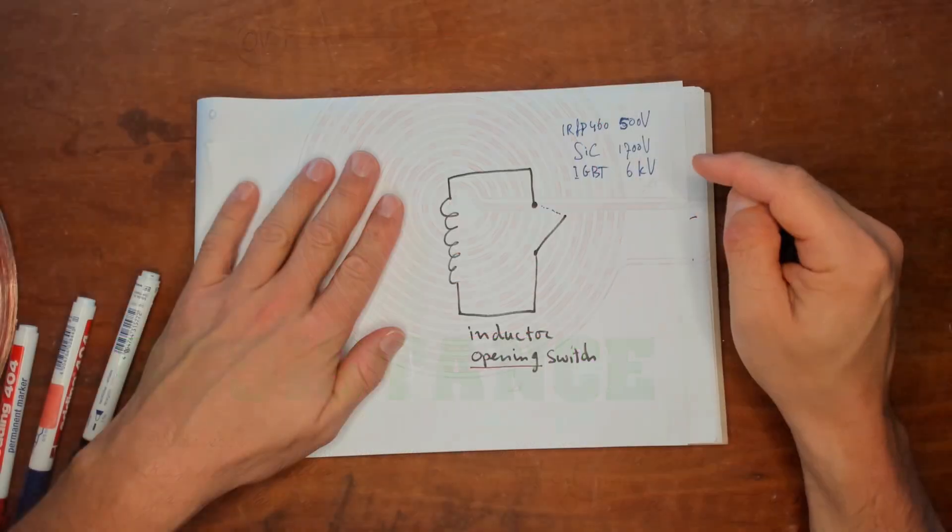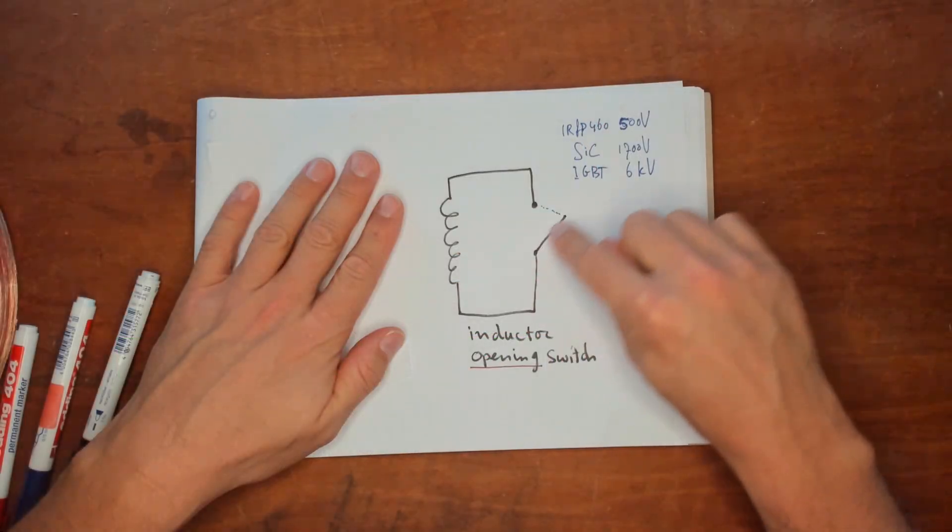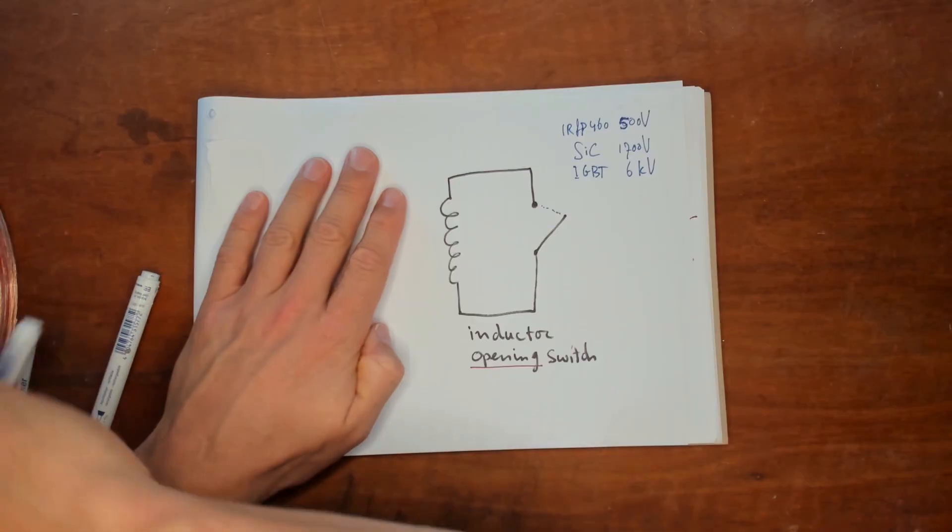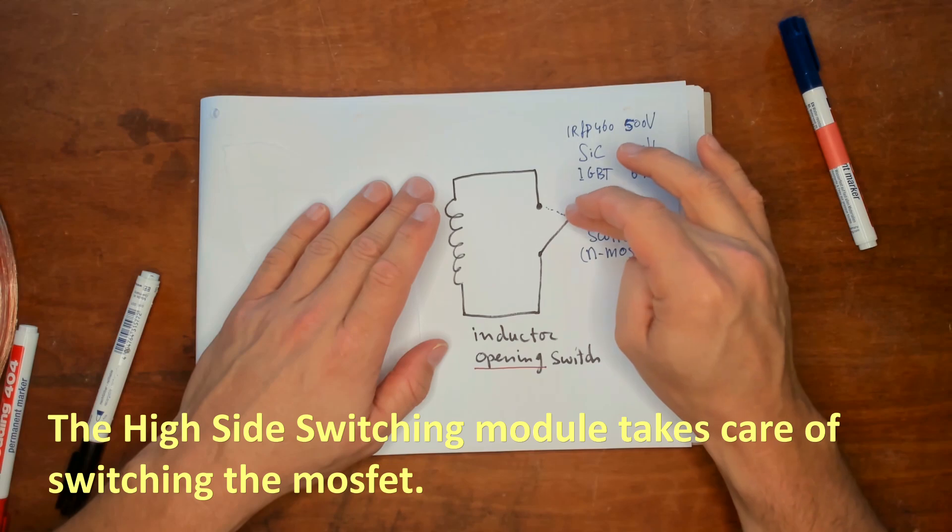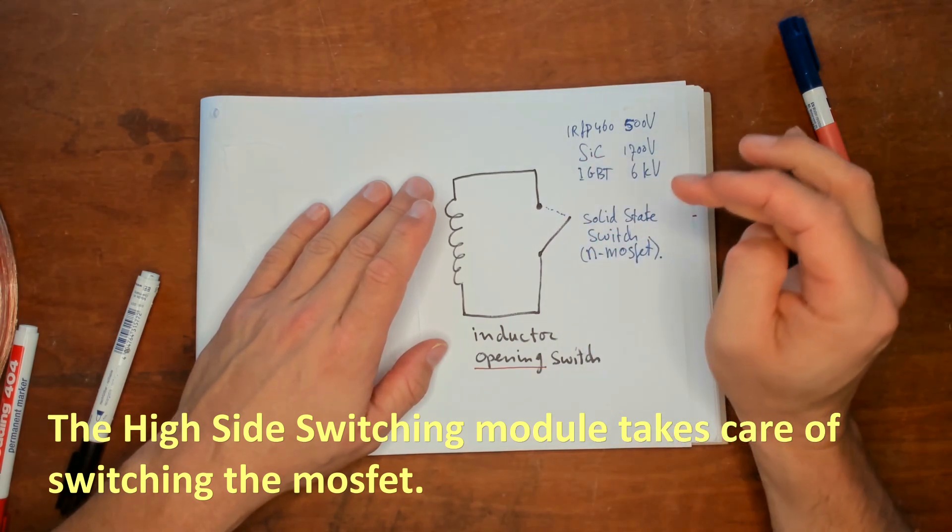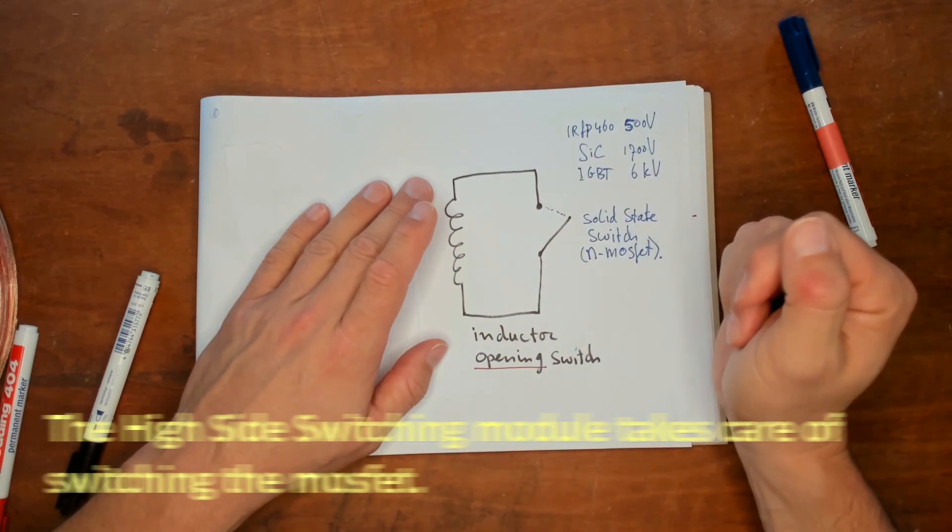So now we have the switch that is made of a MOSFET. This solid state switch needs to switch really fast for the impulse to be really fast.